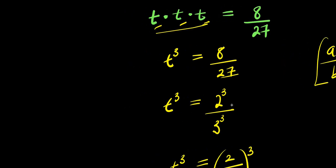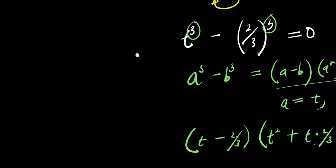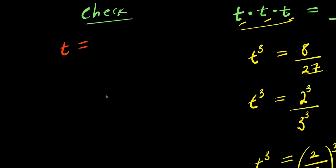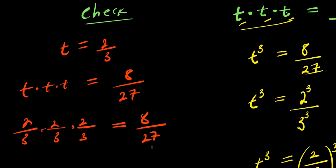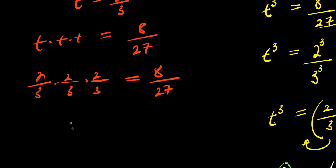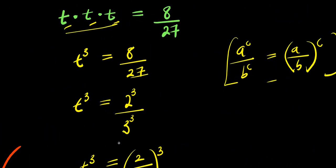So what I am going to do will be to insert that real solution back in to verify it satisfies the equation. So I have t equals 2 over 3. Inserting: 2 over 3 times 2 over 3 times 2 over 3 equals 8 over 27. We have 2 times 2 times 2, that is 8, divided by 3 times 3 times 3, that is 27, and this equals 8 divided by 27. So that is it. Thank you and goodbye.